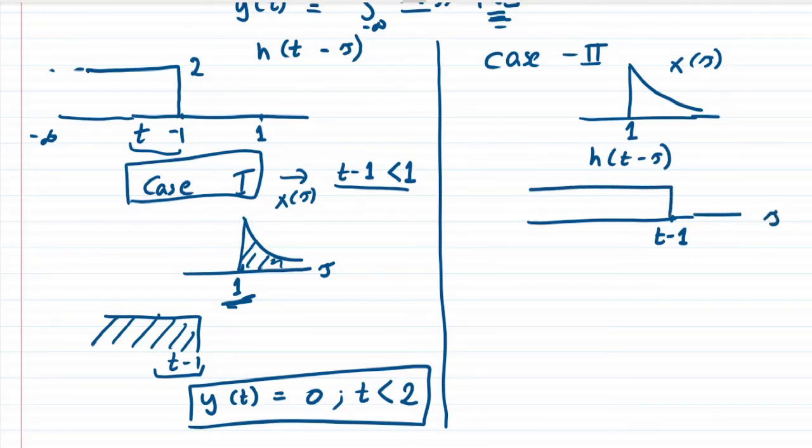In case 2, the terminal point of the impulse response t minus 1 is greater than 1. In this condition we would have an overlap, and that overlap would depend on the value of t minus 1.